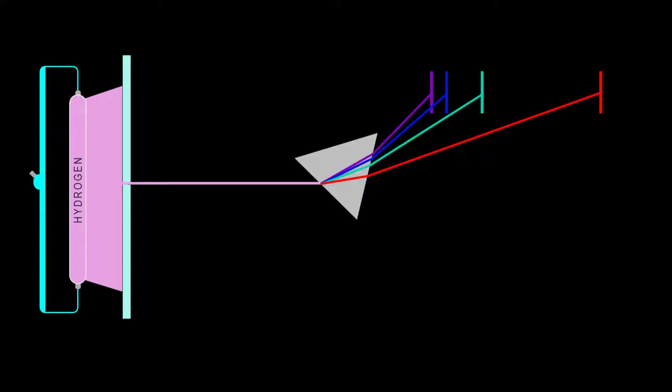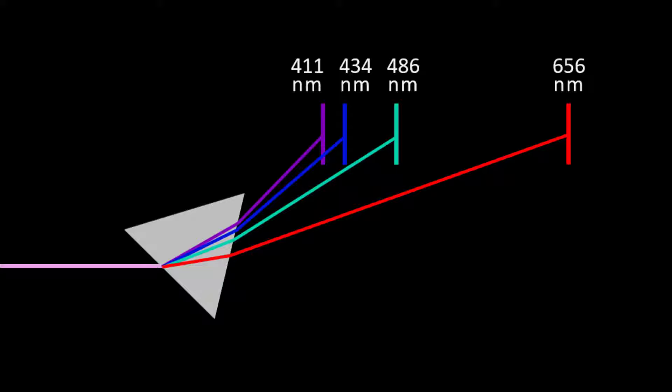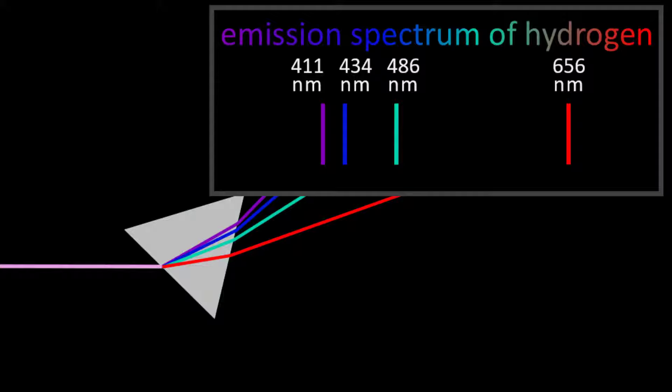Violet at 411 nanometers, blue at 434 nanometers, blue-green at 486 nanometers, and red at 656 nanometers. This is the emission spectrum of hydrogen. An emission spectrum is all the specific colors emitted by an energized substance.